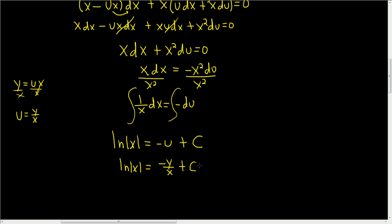If we subtract the c, we end up with negative y over x equals natural log of absolute value of x minus c. And if we multiply by x, we have negative y equals x times the natural log of absolute value of x minus c.